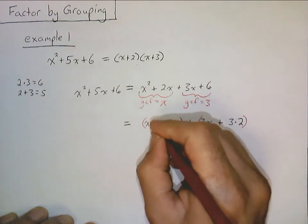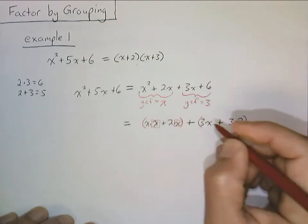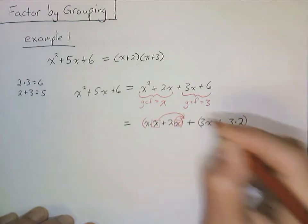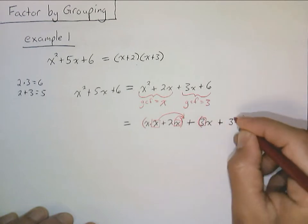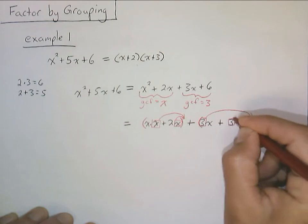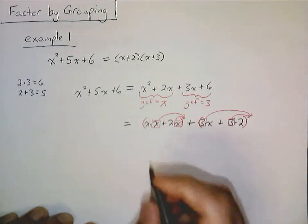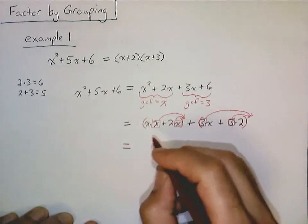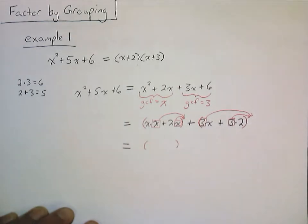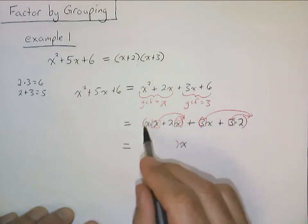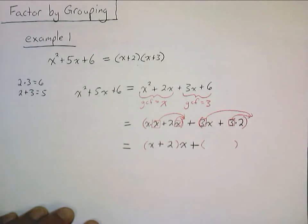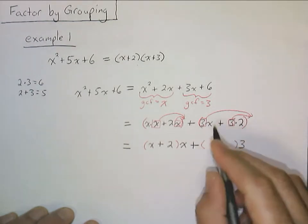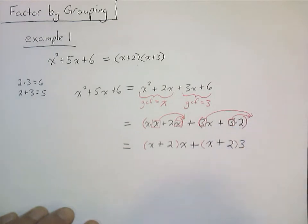We just notice that we have the GCF of x in each of these first two terms, which we're going to undistribute. It doesn't really matter which side of the parentheses you bring it out to, because of commutativity. We're going to do the same thing over here — this common factor of 3 gets factored out, or undistributed. So what we end up with: we've pulled the common factor of x out to this side, and what's left inside we've got x plus 2. Bring down our plus sign. We've pulled the 3 out, and what's left inside the parentheses we have x plus 2. Fantastic!